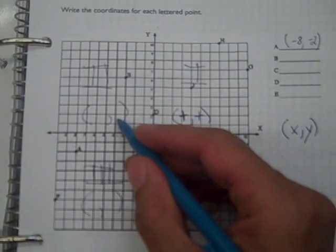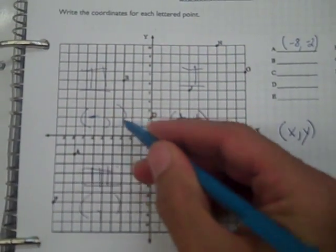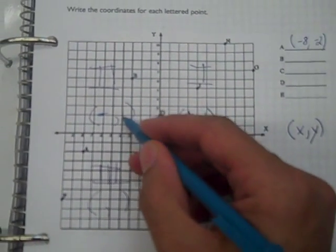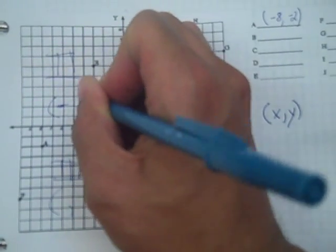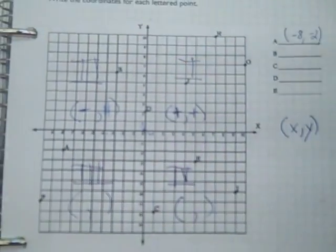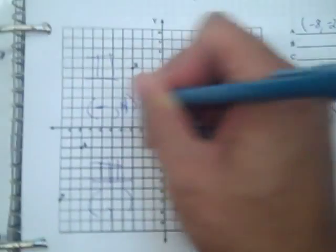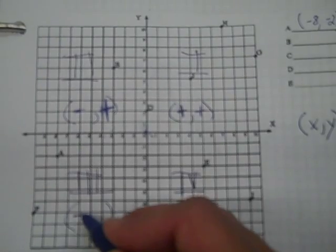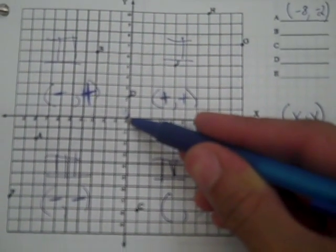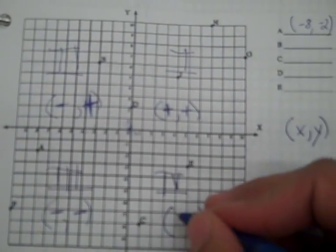To get to the second quadrant, we're moving to the left of zero, so our x will be negative, and we're moving above zero, so our y will be positive. In the third quadrant, we go to the left of zero, so our x will be negative, and we go below zero, so our y will be negative. Then to get to the fourth quadrant, we move to the right of zero, so our x will be positive, and we go below zero, so our y will be negative.